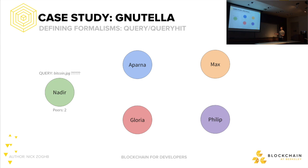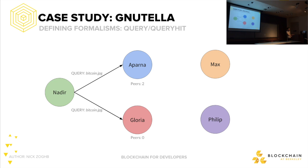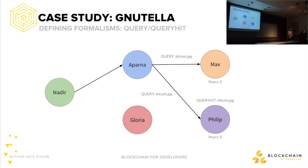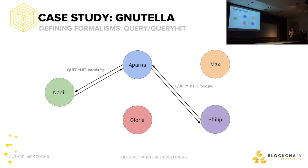Nadir is on the network and connected to at least two nodes — Aparna and Gloria. He makes a query for Bitcoin.jpg. Gloria is connected to zero peers, so the query dies there. But Aparna is connected to two other people, so the query continues. At long last, there's a query hit at Philip — Philip had it all along. Philip returns it to Aparna, and that's returned to Nadir.